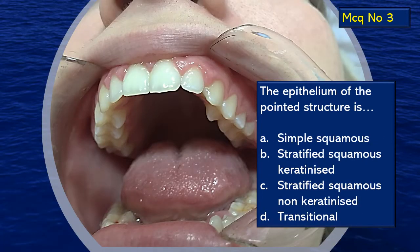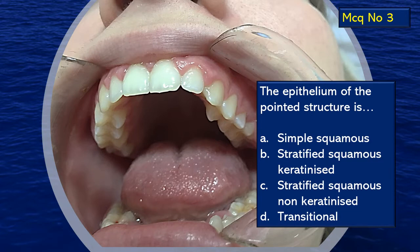MCQ number three: there is a particular mucosal area being pointed out inside the mouth. What epithelium is that area covered with? Here are the choices. Think over and give your answer. We will discuss all the answers at the end of the video after the discussion.